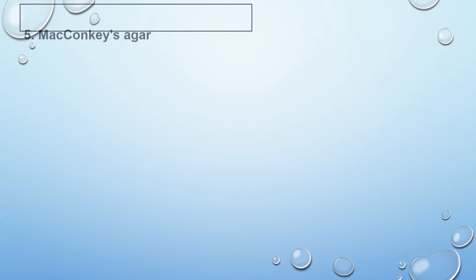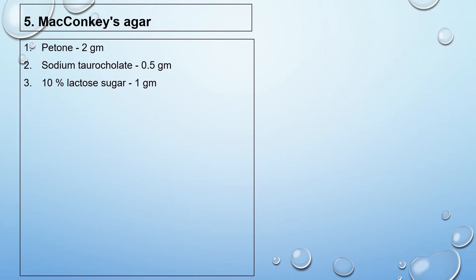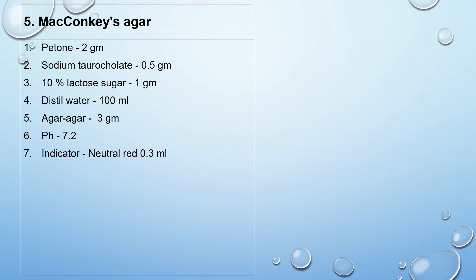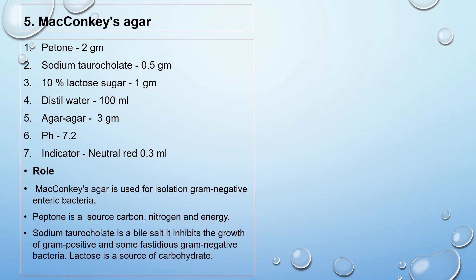The fifth one is McConkey's agar. Composition: peptone 2 gram, sodium taurocholate 5.5 gram, 10% lactose sugar 1 gram, distilled water 100 ml, agar agar 3 gram, pH 7.2, neutral red indicator 0.3 ml. McConkey's agar is used to isolate gram-negative enteric bacteria. Peptone is a source of carbon, nitrogen, and energy; sodium taurocholate is a bile salt that inhibits growth of gram-positive and some fastidious gram-negative bacteria; and lactose acts as a source of carbohydrate.